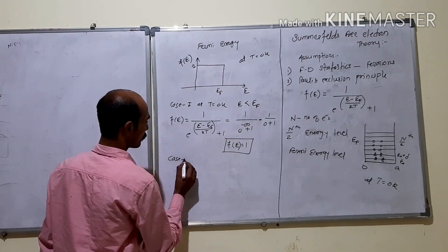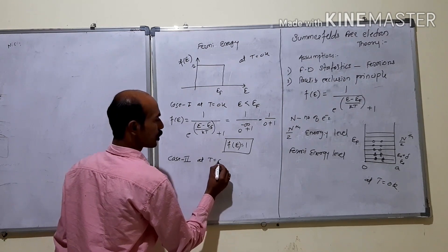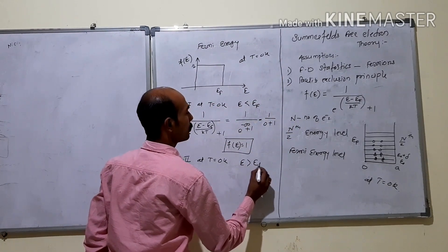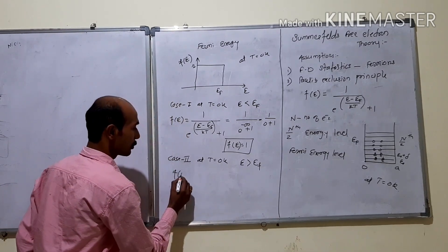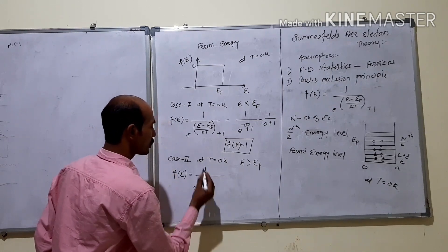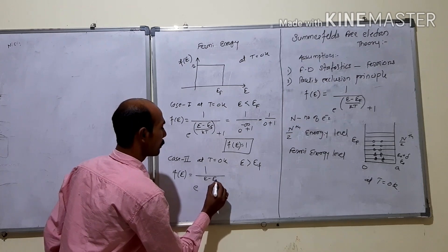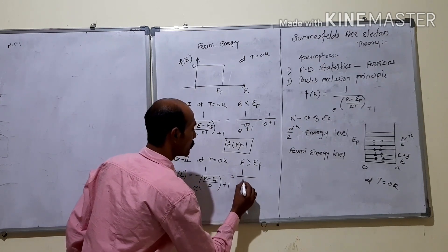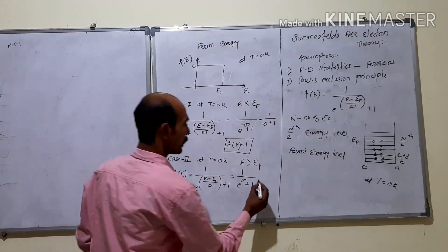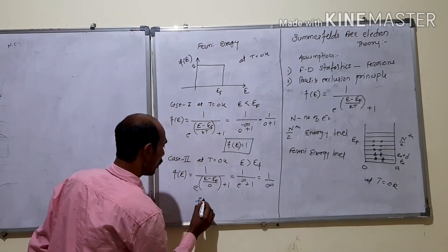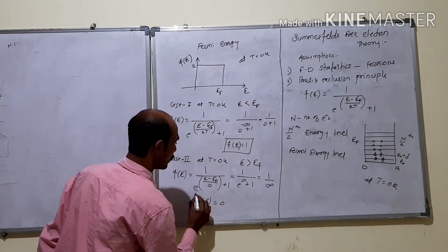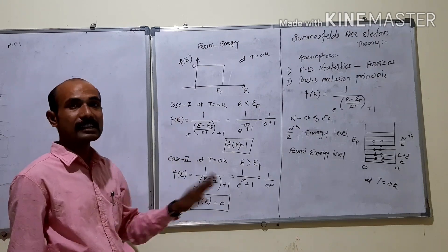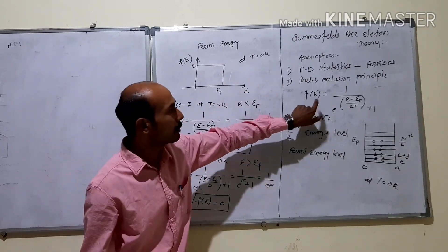Case 2: At T = 0 K and energy E greater than EF — that is, above EF — the distribution function f(E) = 1 / (e^((E - EF) / 0) + 1). This becomes 1 / (e^∞ + 1), and since e^∞ is infinity and 1/infinity is 0, f(E) = 0. So for energy levels higher than the Fermi energy, the Fermi-Dirac distribution function is 0, meaning those levels are completely empty.